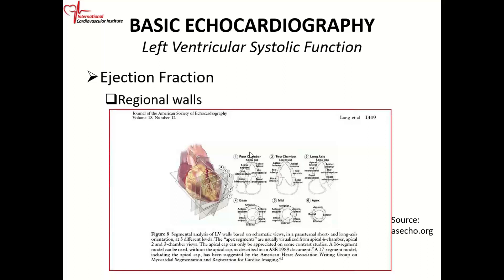In the apical four-chamber view, the anterior lateral wall is divided into three levels. Closer to the mitral valve is the basal segment — your basal anterior lateral wall. Closer to the papillary muscles is the mid-segment — your mid-anterior lateral wall. And then there is your apical anterior lateral wall. Similarly, the inferior septum is divided into basal, mid, and apical inferior septal segments.